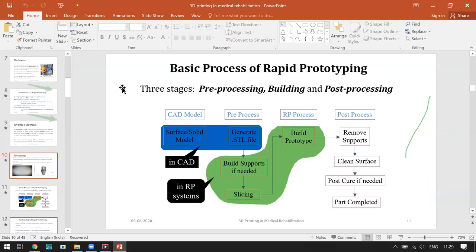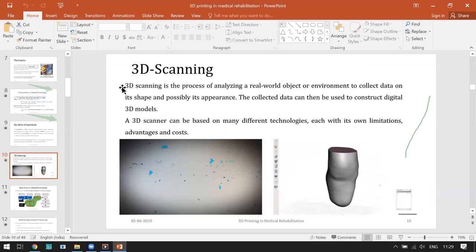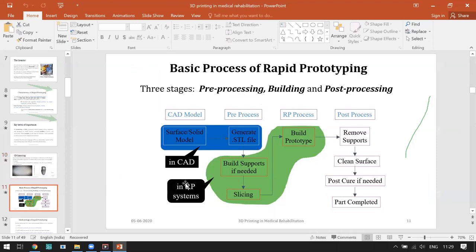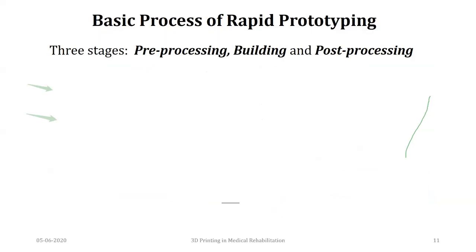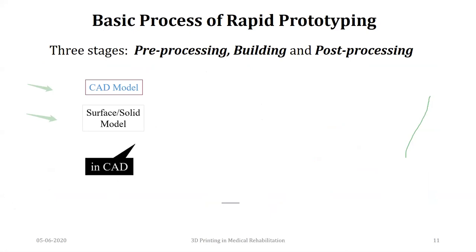I assume this much is clear: that by scanning a human body part and generating a skin on that, we can create whatever body part or socket we are looking for. Now, what are the basic steps of this process? The first thing required is a CAD model, which could be in the form of a surface model or a solid model. The leg we scanned was a solid part; the socket we created is a hollow cavity — a surface model with a thickness of X millimeters.